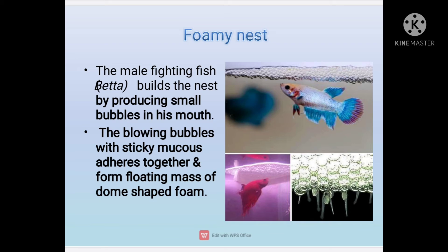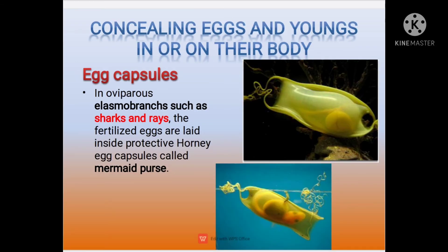The next pattern of parental care shown by fishes is concealing eggs and young ones in or on their body. In this method fishes protect their young ones by keeping them inside or on their bodies. The first subtype is the egg capsule — in oviparous elasmobranch branches such as sharks and rays, the fertilized eggs are laid inside a protective horny egg capsule called the mermaid's purse.